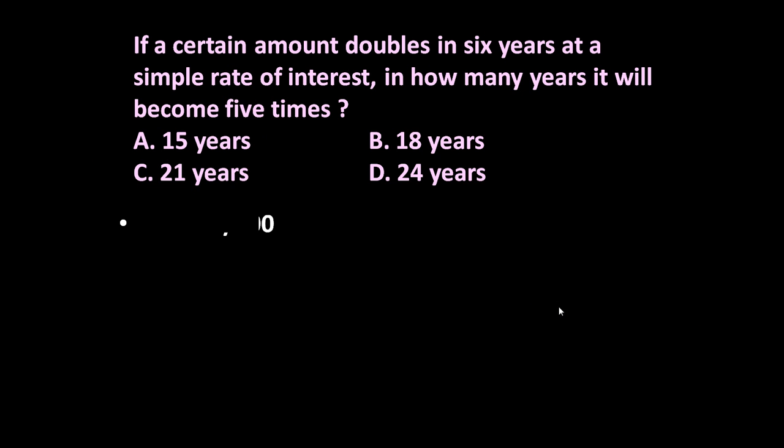So in how many years it will become 5 times? Our formula for the simple rate of interest is I equals PNR upon 100. I is the interest, P is the principal, N is number of years and R is the rate of interest.